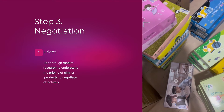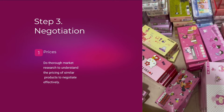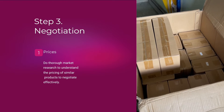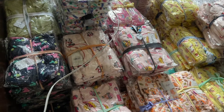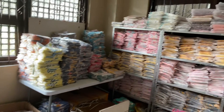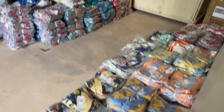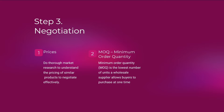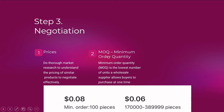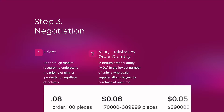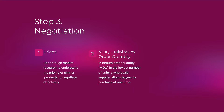One powerful negotiation tactic is to leverage other offers. I love checking prices from different suppliers because most suppliers are willing to match or beat their competitors' offers just to secure your order. Next, I negotiate the MOQ, or minimum order quantity, especially if it's too high. You'll see the MOQ on the supplier's product listing, but you don't need to follow it to get their best price — everything can be negotiated.